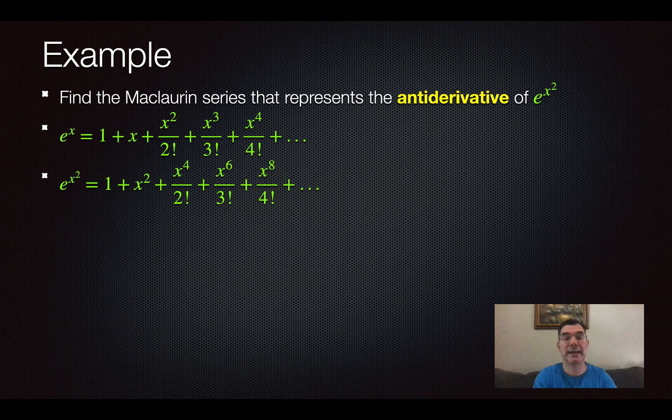So e^(x²) would look exactly the same, but every x will be replaced with x². So my second term of x will become x². The third term will become x⁴ over 2 factorial and so on. I'm basically doubling the exponents that are already there in e^x to get e^(x²).